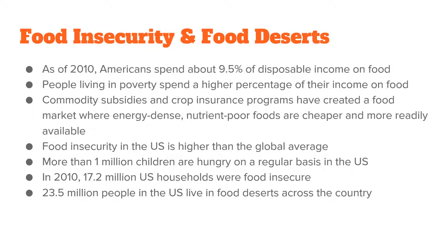Food insecurity in the US is actually higher than it is globally, which is striking for a so-called developed country. More than one million children are hungry on a regular basis. In 2010, 17.2 million households were food insecure and 23.5 million people in the US were living in food deserts. These statistics are a few years old, so it would be interesting to look for more recent data.